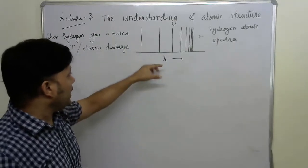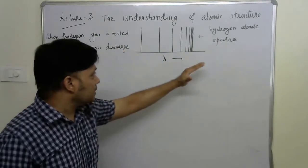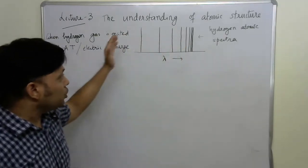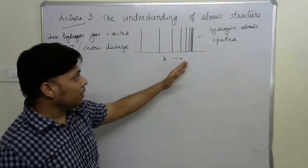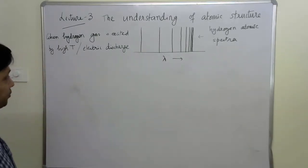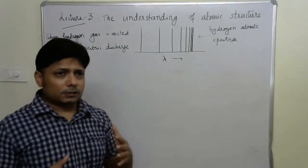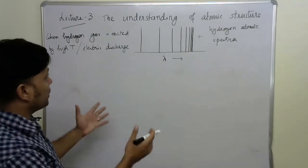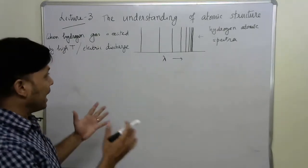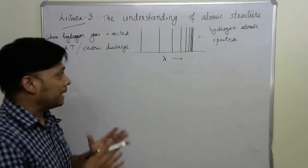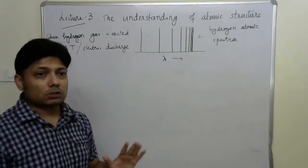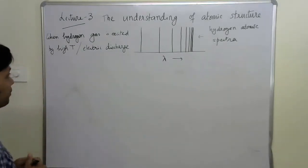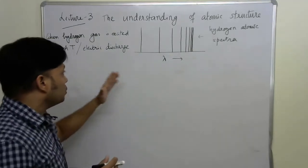The lines appear closely spaced with increasing lambda value. I'm sure you are already familiar with such kind of hydrogen atomic spectra. It started to intrigue people that how such spectra originated. It has to be linked something with the structure of atom. But at that time it was not possible to understand how these spectral lines appeared.